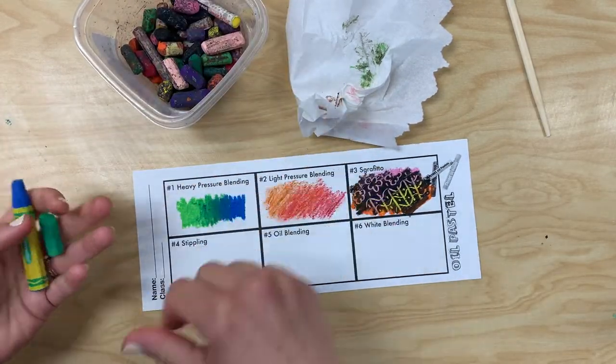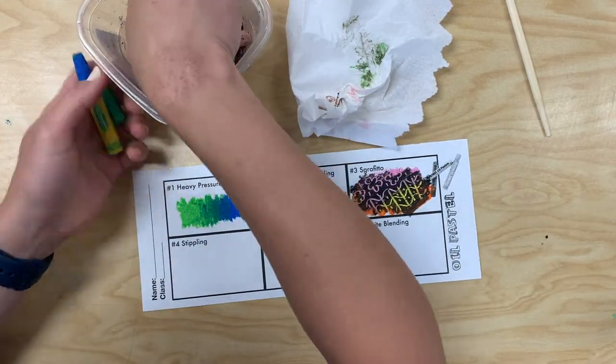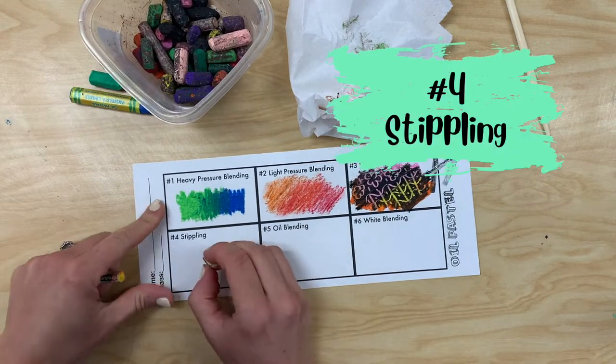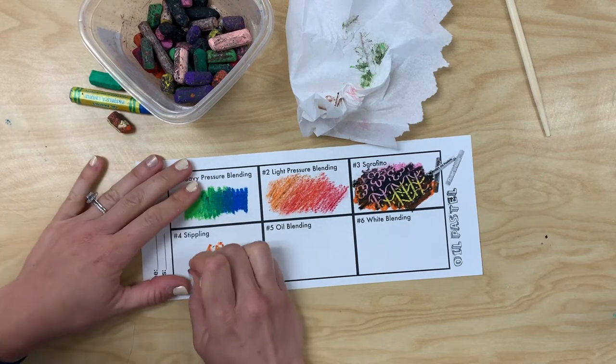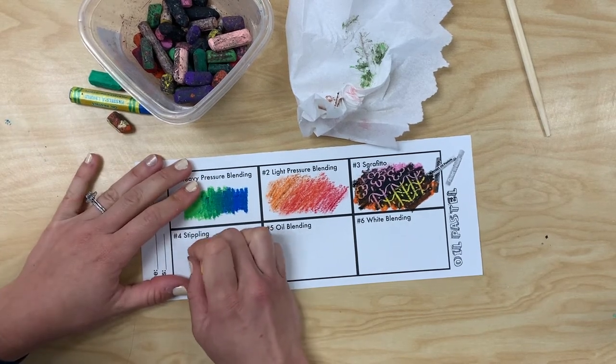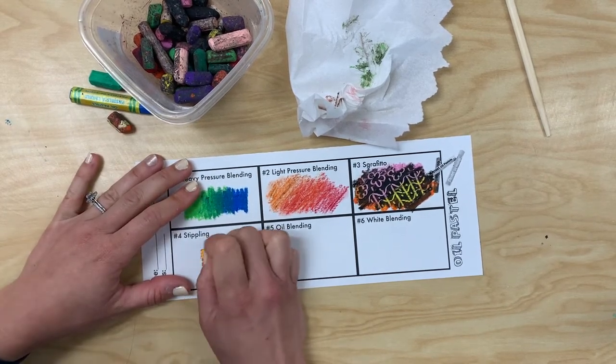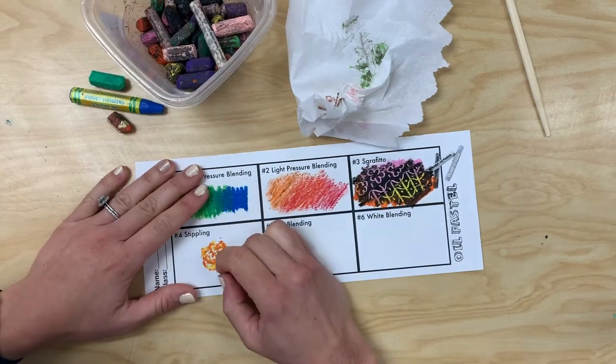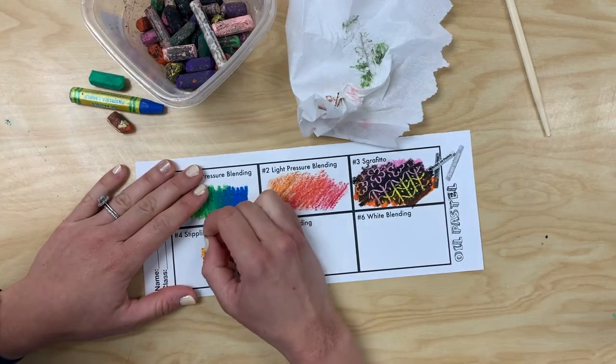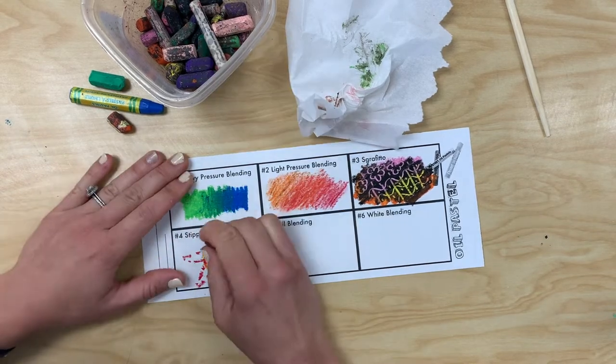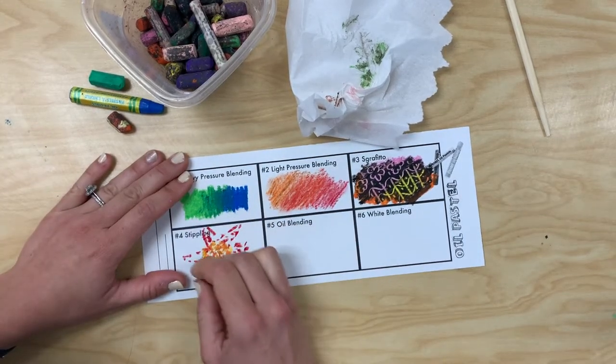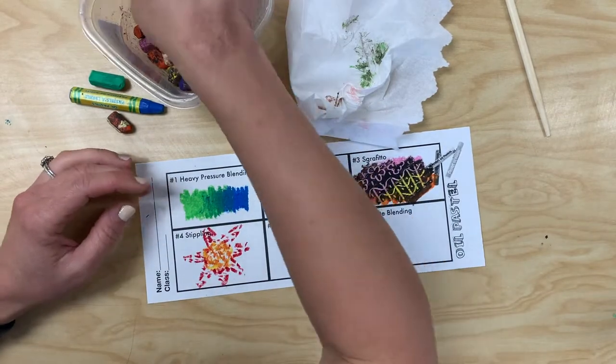Next up is stippling. Stippling is using small dots to fill in an area. First, I draw an outline of what I would like to draw with the dots. You are using only dots, no solid colors, layering colors on top of each other. I create a flower or sun-like pattern and design here, but you may draw whatever you would like.